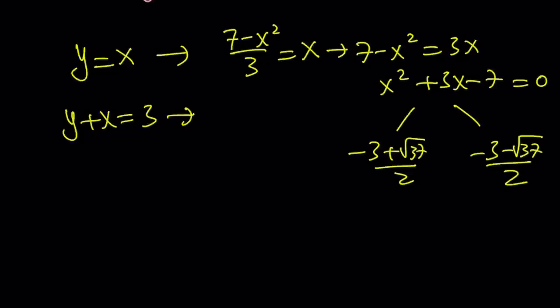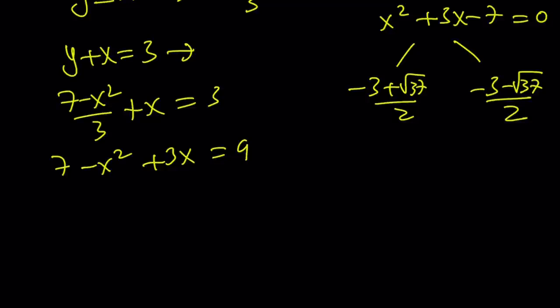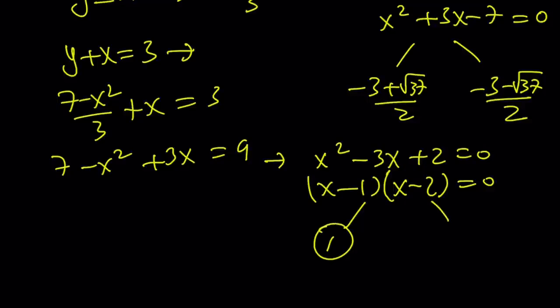And this one is going to give you 7 minus x squared over 3 plus x is equal to 3. Multiply everything by 3. Easier than making a common denominator. Put everything on the same side. x squared minus 3x plus 2 is equal to 0. Yay! This is great. Because we have another solution. Come on. Pretend we were surprised. x equals 1 and x equals 2.